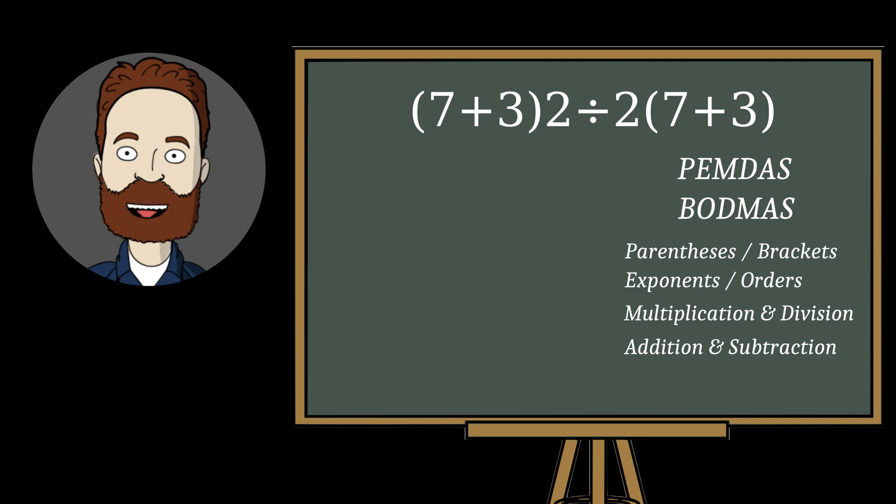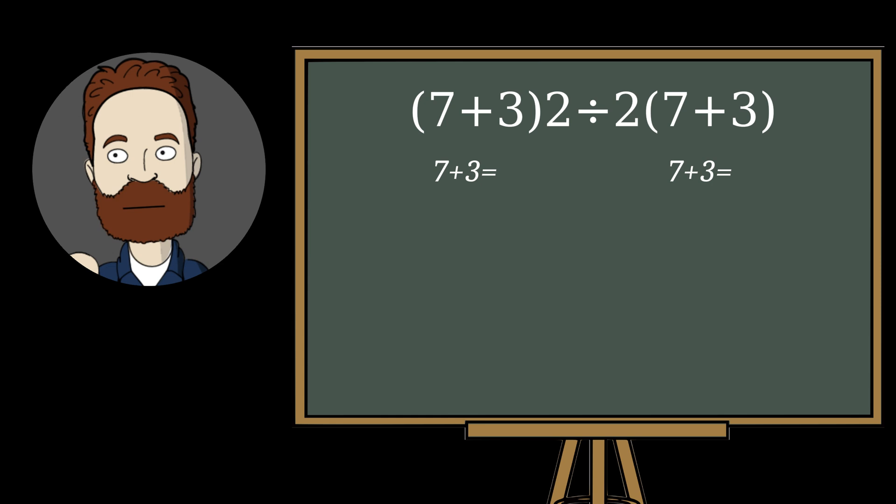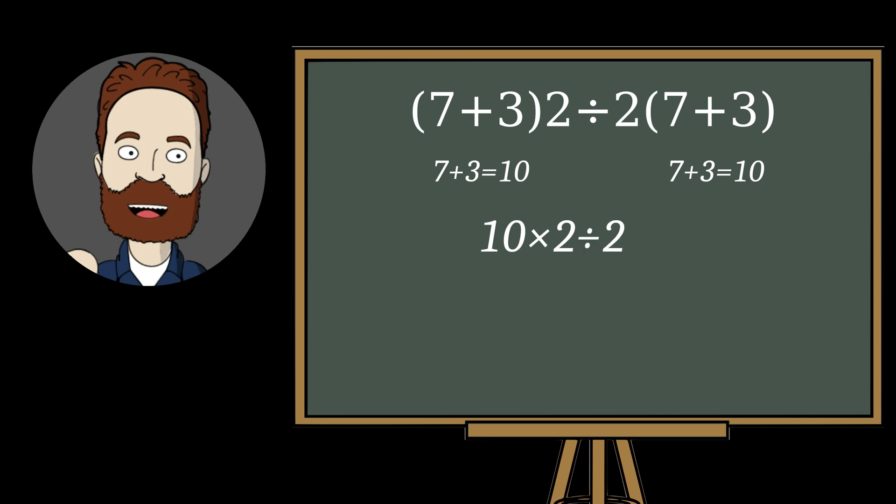Now, following the rule, first, the parentheses, 7 plus 3 equals 10. Substitute the result, 10 multiplied by 2, divided by 2, multiplied by 10,